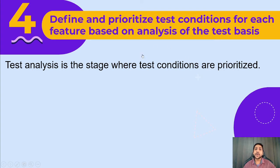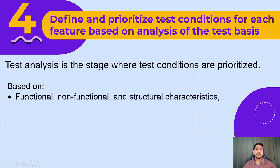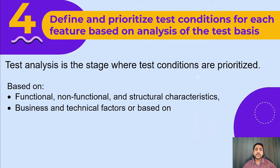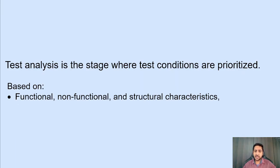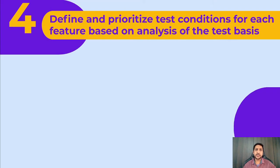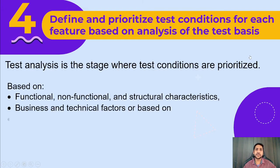Once we get the features, we define and prioritize the test conditions for each feature based on the analysis of the test basis. Test analysis is the stage where test conditions are prioritized. Prioritization is based on multiple factors: functional and non-functional and structural characteristics, business and technical factors, and level of risk. If a feature is very risky, you keep it on top so it is tested first.